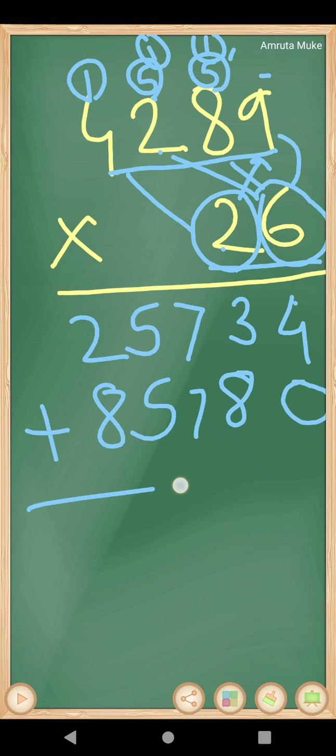Okay, so now we have to do addition. 4 plus 0, 4. 3 plus 8, it's 11. 11's 1 here, 1 I carry over here. 7, 7, 14. 14, 14 plus 1, 15. 15's 5 here, 1 I am carrying over here.